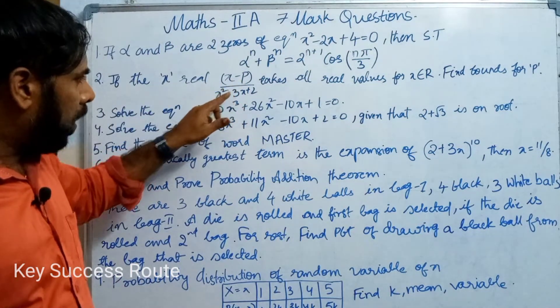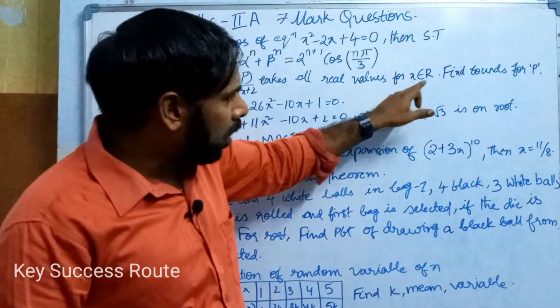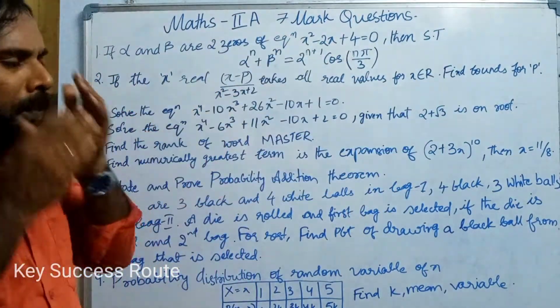If the x real x minus p by x square minus 3x plus 2 takes all real values for all x belongs to R, then find bounds for p.